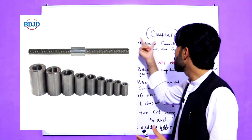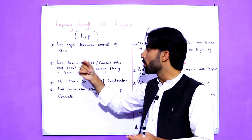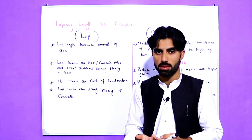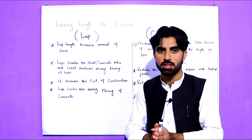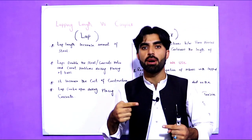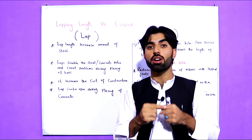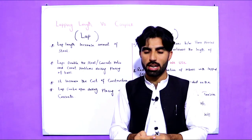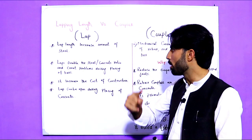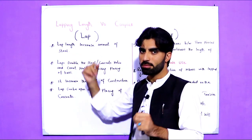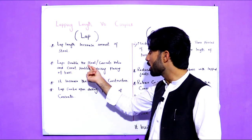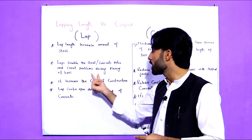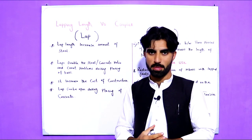The first one is lap and the second one is coupler. For lap: lapping length increases the amount of steel bars when you construct a building. We overlap one steel bar with another to get the complete design length, because a single bar is insufficient for the full length of a beam, column, or slab. Remember: lap length increases the amount of steel, and it doubles the steel at the overlap zone.